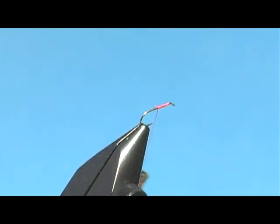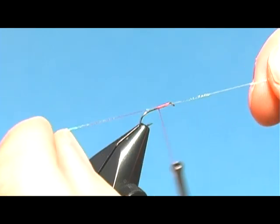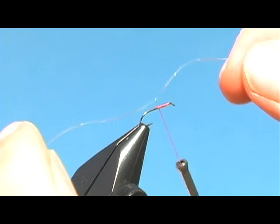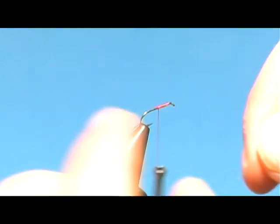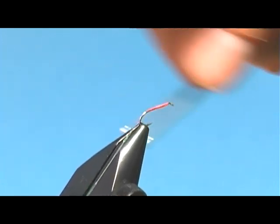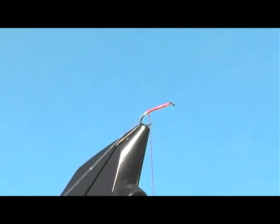And then for the body I'm going to use some crystal flash that's got some crinkly stuff in it, and I'm going to use that to give the body a little bit of flash. So I'm going to tie this in here at midpoint and leave some spaces so that flash can shine through.